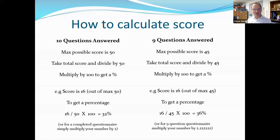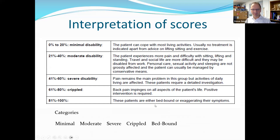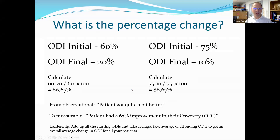Now you have a simple percentage score. Scores are categorized from minimal to bed-bound. In the context of IDD therapy, patients typically fall anywhere from moderate to crippled — we don't see bed-bound patients. This percentage can be recorded in your notes.